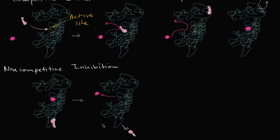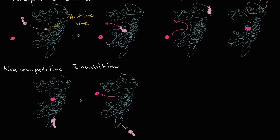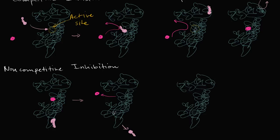The way I showed this non-competitive inhibition, I showed the inhibitor attaching at an allosteric site. But it actually doesn't even have to be that case — as long as it does not prevent the substrate from binding to the active site, the inhibitor can even bind close to or at the active site. This is the scenario typically given for non-competitive inhibition. The key idea is that they're not competing: both can bind to the enzyme, and if one binds first, the other can still bind. But the reaction is not going to be catalyzed.